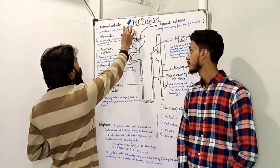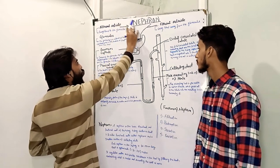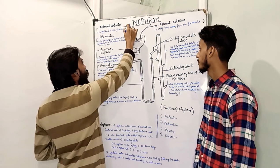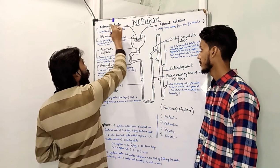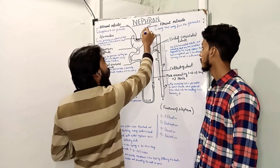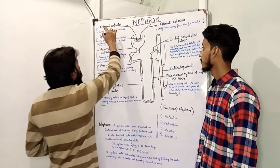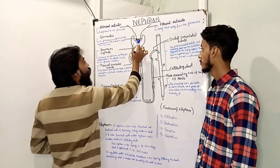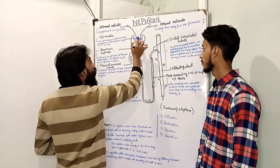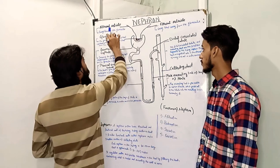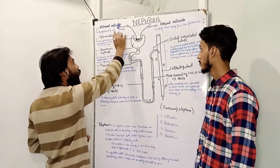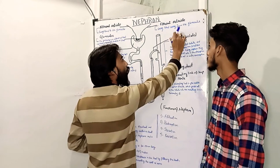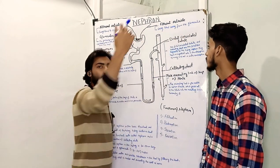The first segment is the afferent arteriole and efferent arteriole. As we can see in the diagram, this point is called the afferent arteriole and this point is called the efferent arteriole. The afferent arteriole brings blood to the glomerulus, while the efferent arteriole carries blood away from the glomerulus.